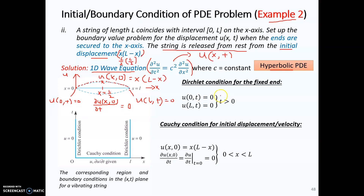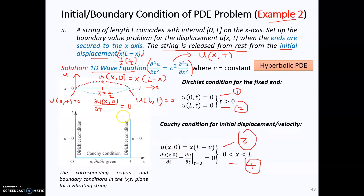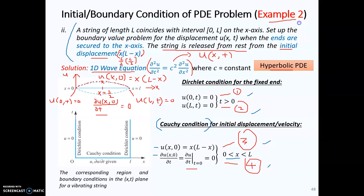Therefore, you obtain two boundary conditions and two initial conditions at time equal to 0. You can also write this notation in an equivalent format — they are the same. When you have both the displacement and the first derivative of displacement given at the same time, this is known as the Cauchy condition. Make sure you learn how to form the boundary and initial conditions based on the problem statement.